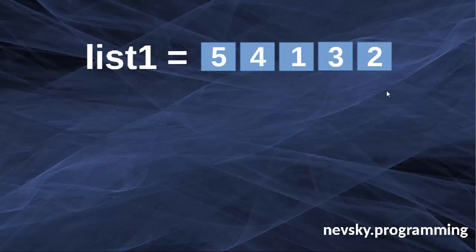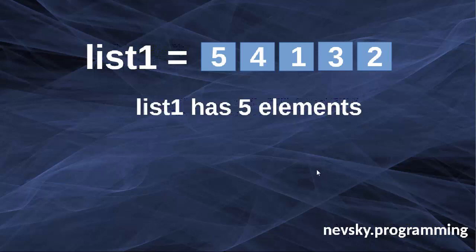Suppose that we have list 1 with elements 5, 4, 1, 3 and 2. It's obvious that our list 1 has 5 elements.